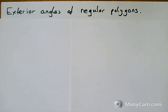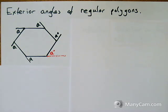To begin with, I'll show you what an exterior angle of a regular polygon actually is. So I've got a six-sided shape here.